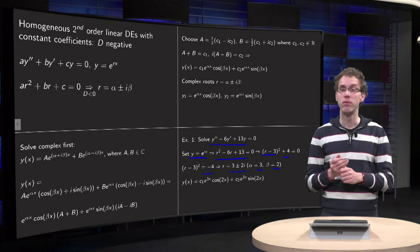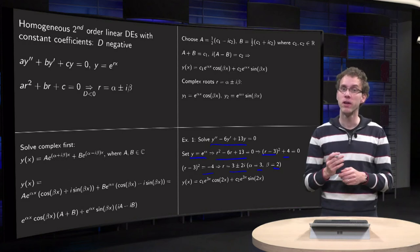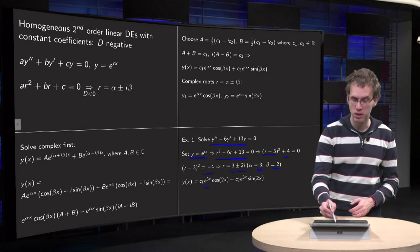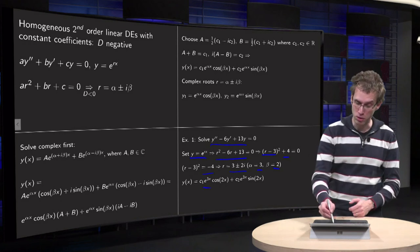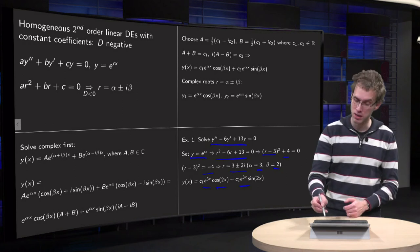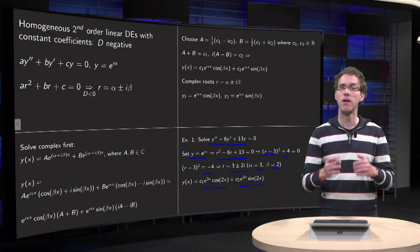Now we know immediately what our solution will be. y(x) = c₁·e^(3x)·cos(2x) + c₂·e^(3x)·sin(2x).